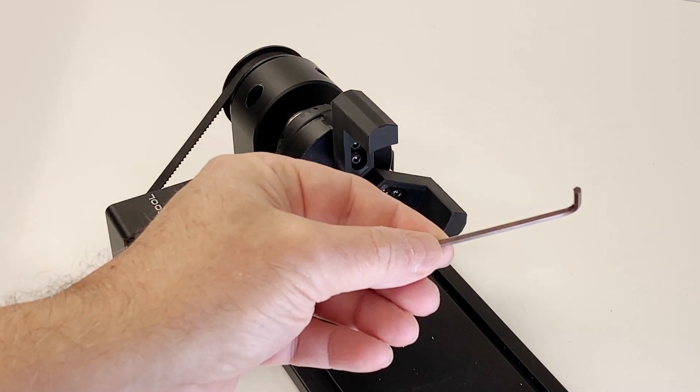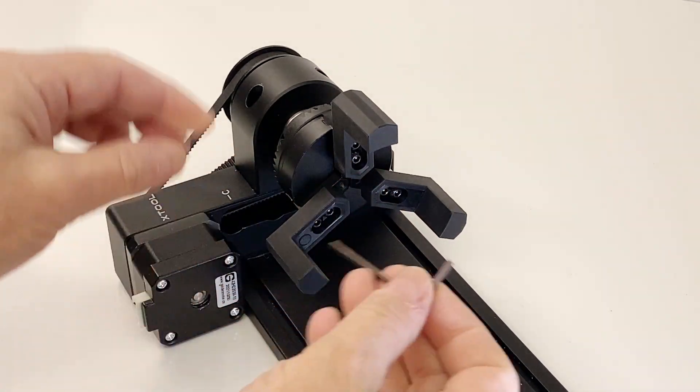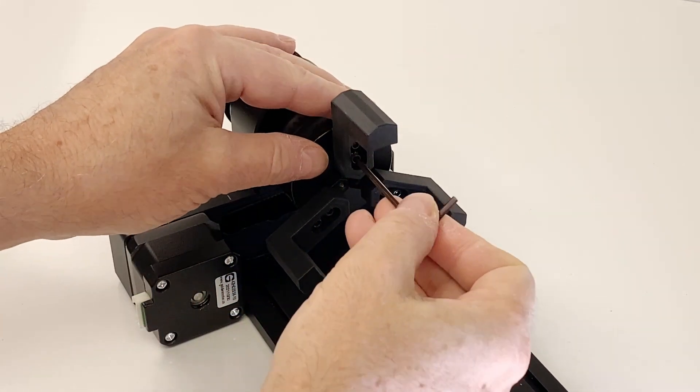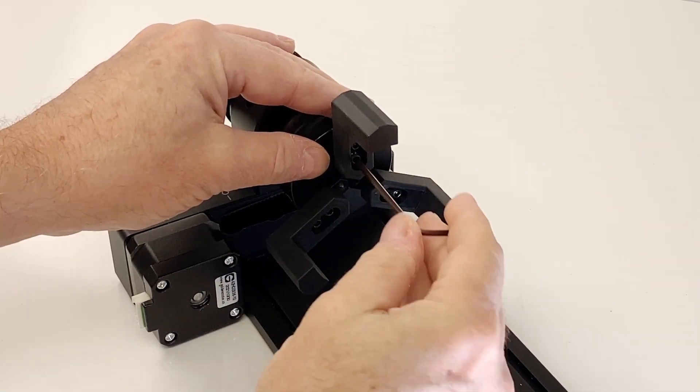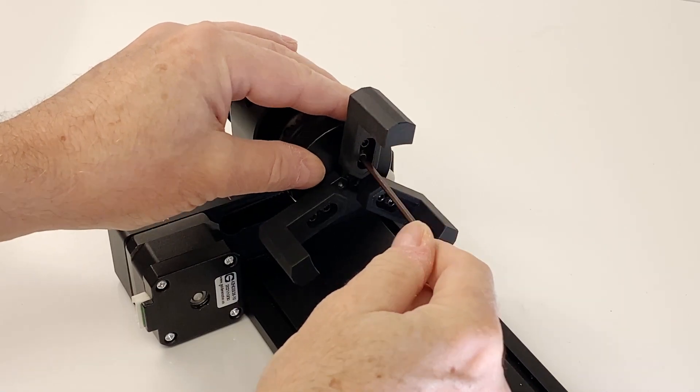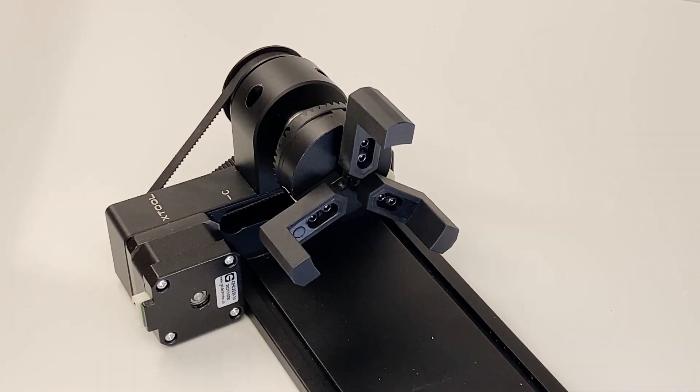Two hex wrenches are in the package with the adapter. These are used to remove the rollers, install the chuck, change chuck jaws, and to reverse the bed. These L-shaped hex wrenches, otherwise known as Allen wrenches, are not the most convenient tools to use.